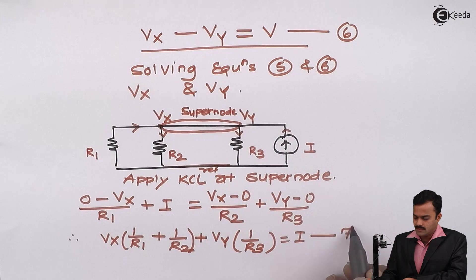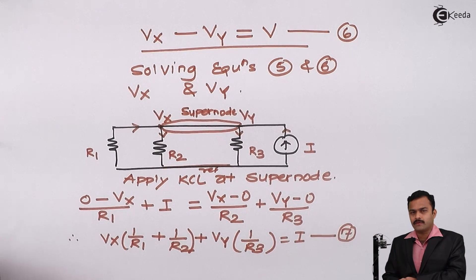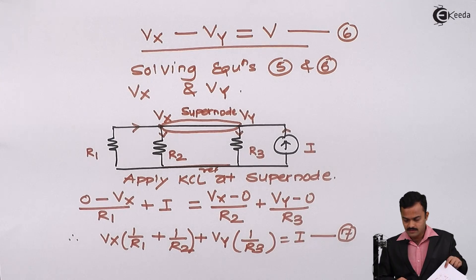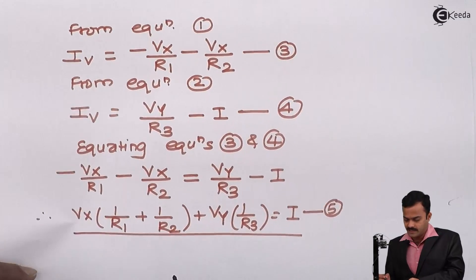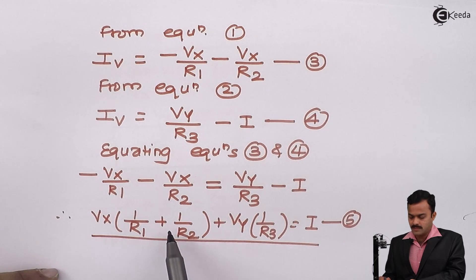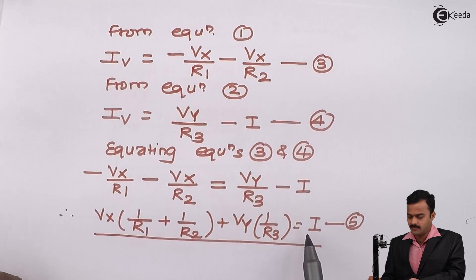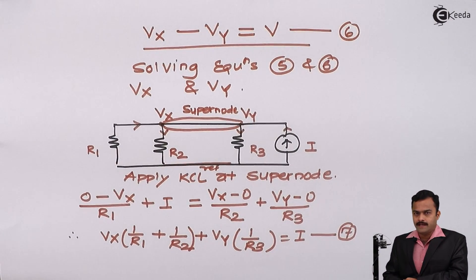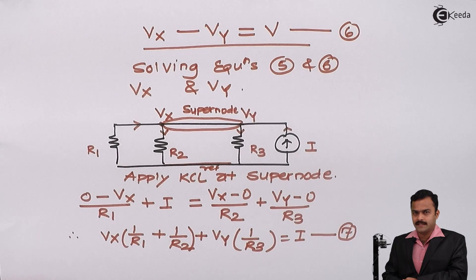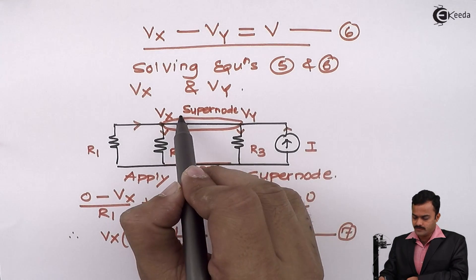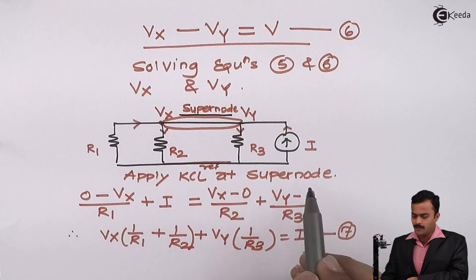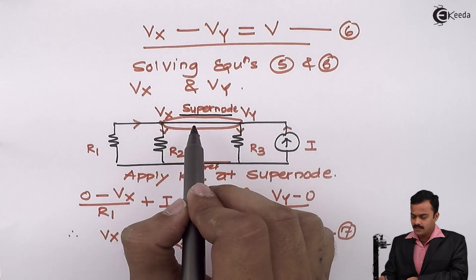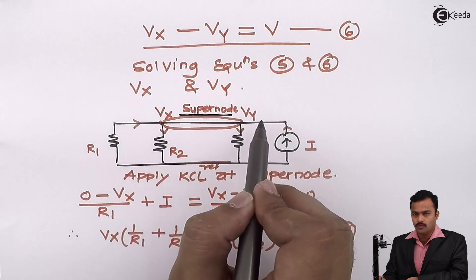I will consider this as the equation number 7. And if I look at equation number 5 and equation number 7, equation number 5 is like this: Vx 1 by R1 plus 1 by R2 plus Vy 1 by R3 equal to I. And equation 7 is also same. So instead of considering two equations and then eliminating third variable, getting one more equation, better we can apply this concept which we call as a super node. So you have to apply KCL as if considering this is one node but having two potentials.